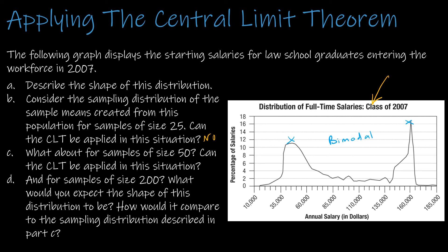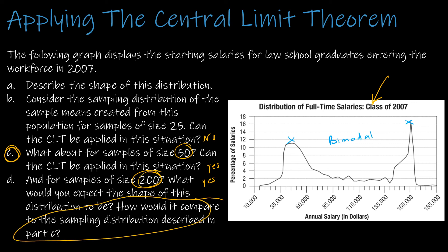What about a sample of size 50? Now I can use the central limit theorem, because 50 is greater than or equal to 30. And for a sample of size 200, that also meets the requirement. For both sample sizes of 50 and 200, I would expect a normal distribution. And how would the distribution for size 200 compare to size 50? Because n is greater, the distribution for 200 would be more nearly normal than the distribution for the sample of size 50.